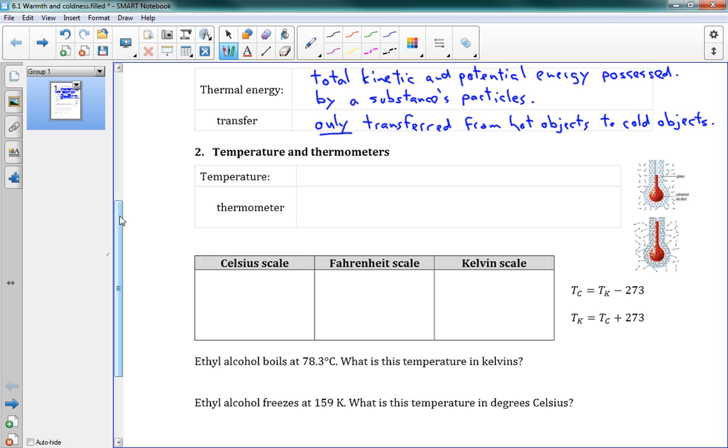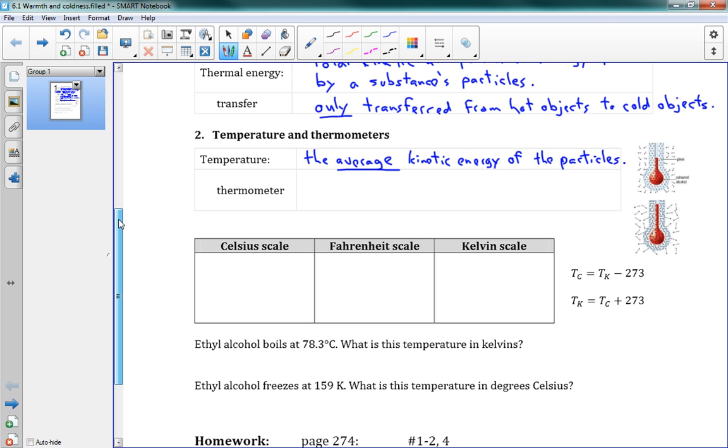Now, we have a way of measuring. We want to measure thermal energy. We don't really have a way of measuring directly thermal energy, but we can measure temperature. Temperature is the average kinetic energy of an object's particles. So it's different from thermal energy. Thermal energy was the total kinetic and potential energy. You add it all up together. Whereas temperature is the average instead of the total, and it's only kinetic energy instead of potential. So we're just measuring one aspect of thermal energy with temperature. Temperature, to measure it, we use a thermometer.